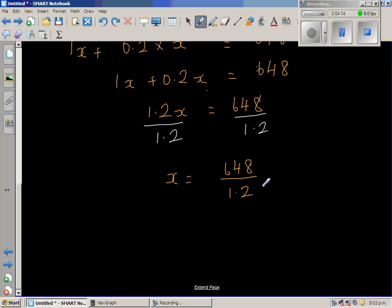So I'll times this by 10 and also times this by 10. So this is 648 over 1.2 times 10. You're making this 10 times bigger. So if you multiply by 10, you get 12. I don't want to use a calculator.